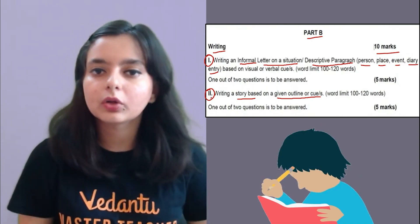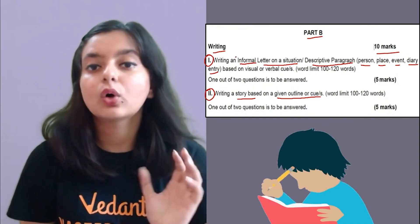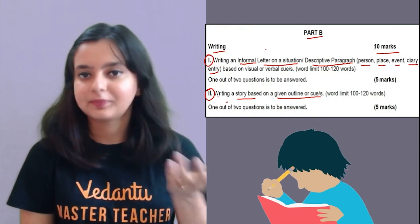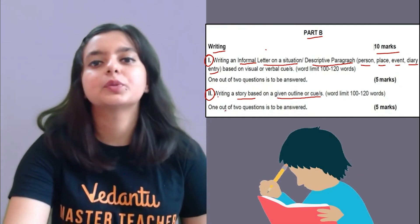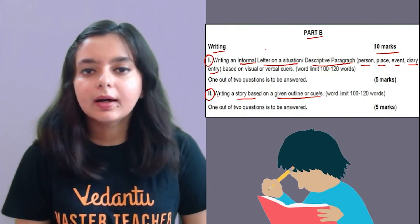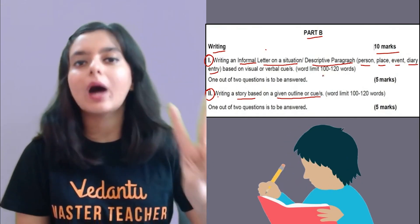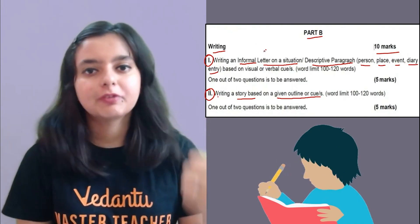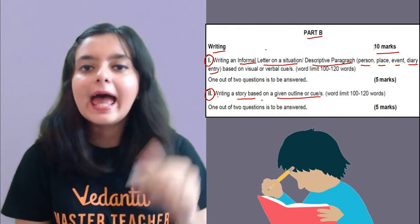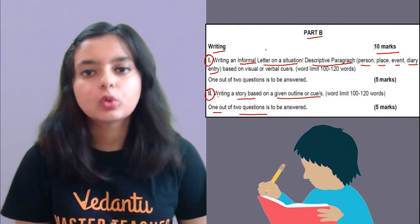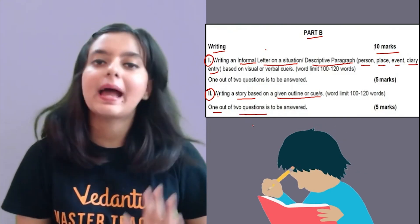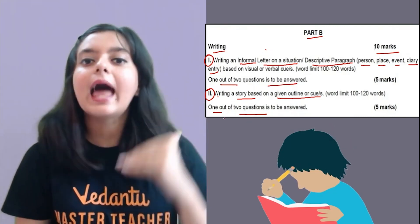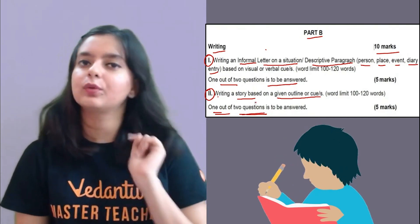Next is story writing, which is compulsory — 5 marks. An outline or cues would be given and you have to complete the story. One out of two questions needs to be answered. For the first writing task also, you get two options — choose one. And for the story also, one out of two questions is to be answered. So in both writing tasks, you have internal choice.